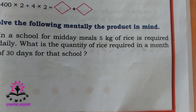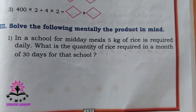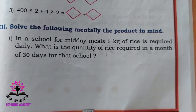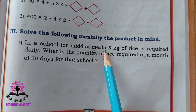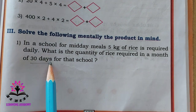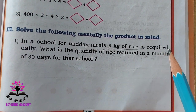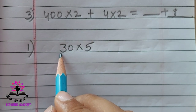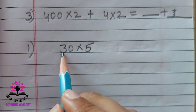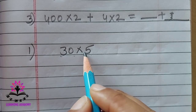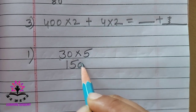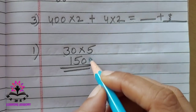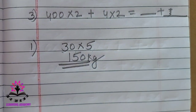In a school, for midday meals, 5 kg of rice is required daily. What is the quantity of rice required in a month of 30 days? One day requires 5 kg, so for 30 days you multiply 5 by 30. Multiply 5 and 3 to get 15, then add 0 in the unit place. The answer is 150. So 150 kg of rice is required for one month.